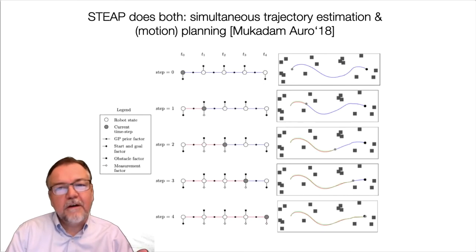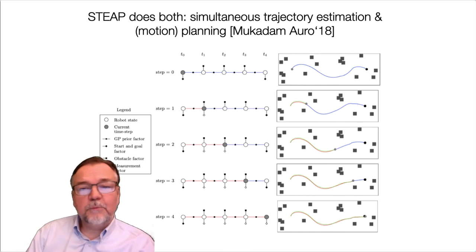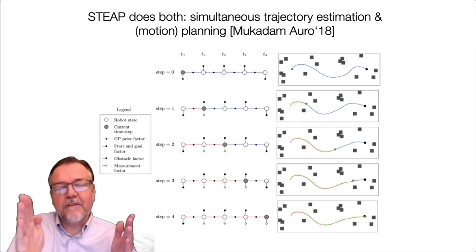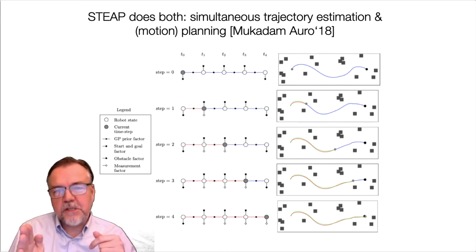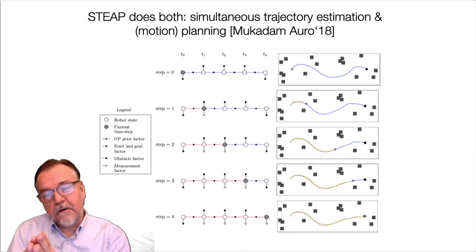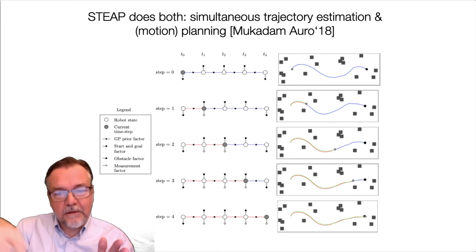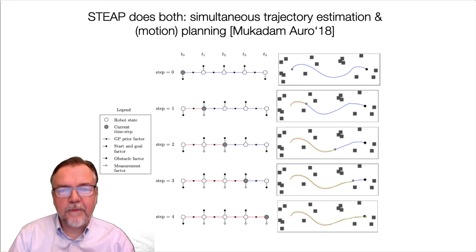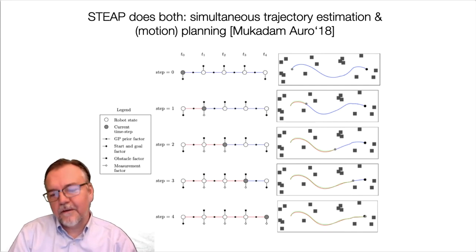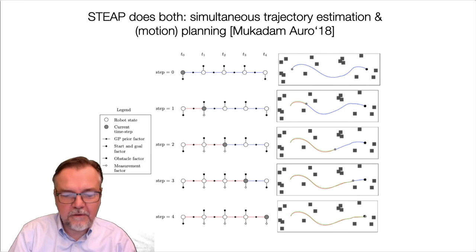A final technical point is that we can put perception and planning together in the same graph, simply advancing a pointer in time as the plan is executed. We can then look at new measurements that come in, revise our estimate of what actually happened, and immediately replan what the optimal course of action is. This is STEEP — Simultaneous Estimation of Trajectories and Planning — work by Mustafa Mukadam, Jing Dong, and others at Georgia Tech.